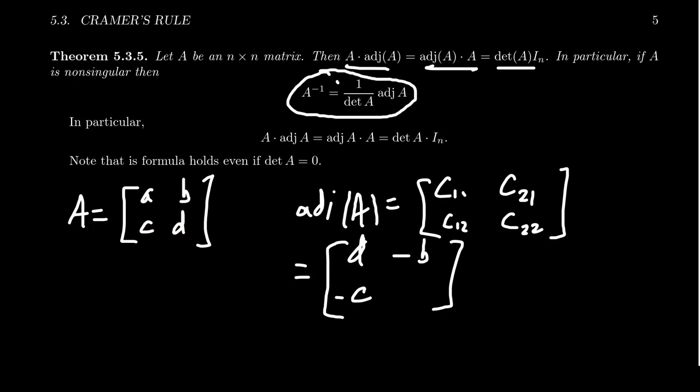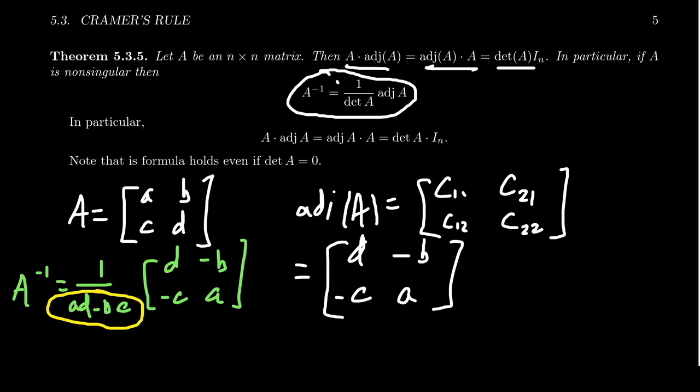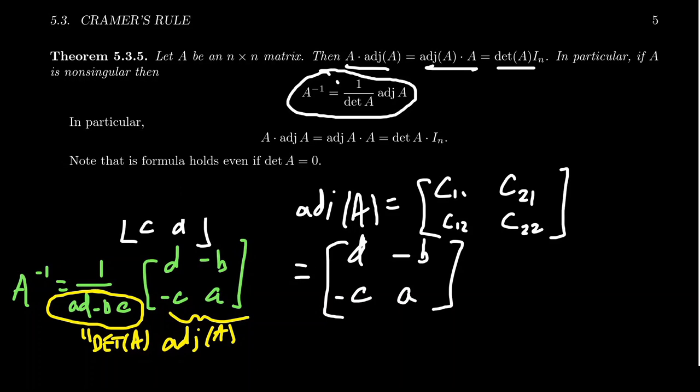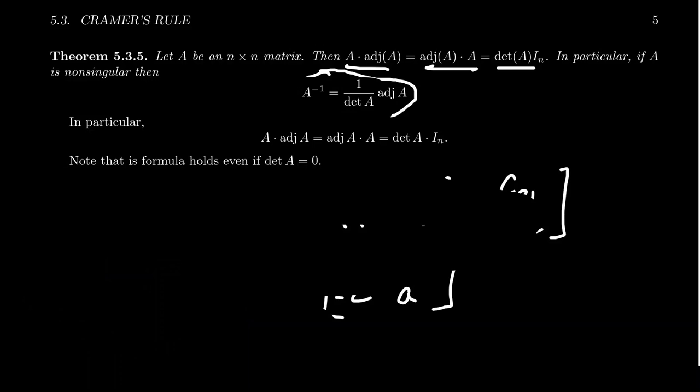Now, it feels like I've seen this before some way, right? Don't we know the formula for A inverse for a 2-by-2 matrix? You take 1 over AD minus BC times by this matrix right here: D, negative B, negative C, A. Now, this number in the bottom, we've mentioned it before. This is none other than the determinant of the matrix A. This matrix right here is none other than the adjugate of this 2-by-2 matrix. And so this inverse formula we have is none other than just Theorem 5.3.5 for the special case of 2-by-2 matrices.